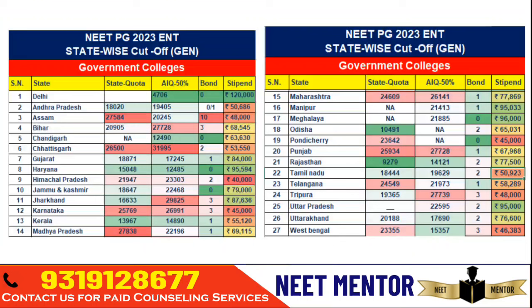There are two types of states — low merit and high merit — and you should know which type your home state is. In a low merit state, you will get better seats through state quota compared to all India quota counseling. Through all India counseling, you can get a seat anywhere in India because 50% seats from all government institutes are covered in MCC, and 100% seats in central universities.